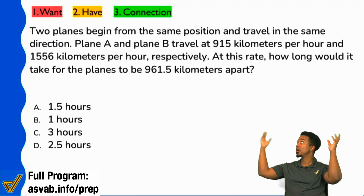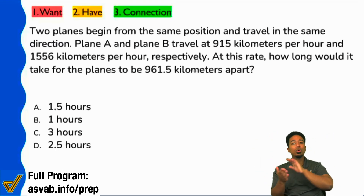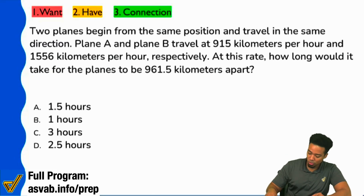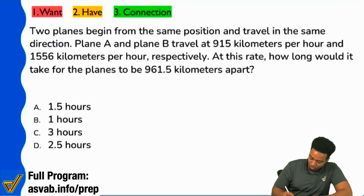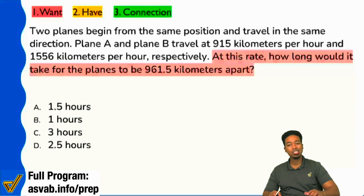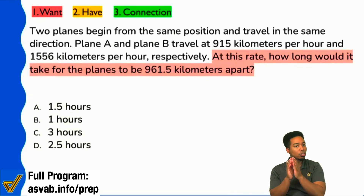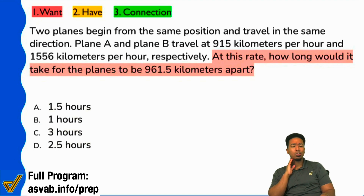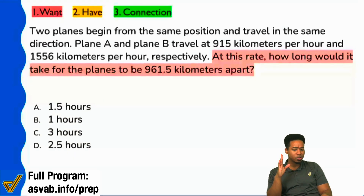Not the whole thing — like two planes. We want to go ahead and start with the question sentence. So right here: 'At this rate, how long would it take for the planes to be 961.5 kilometers apart?' Everyone, short phrase — what is it that we're looking for in that red highlight? What are they asking us to find?